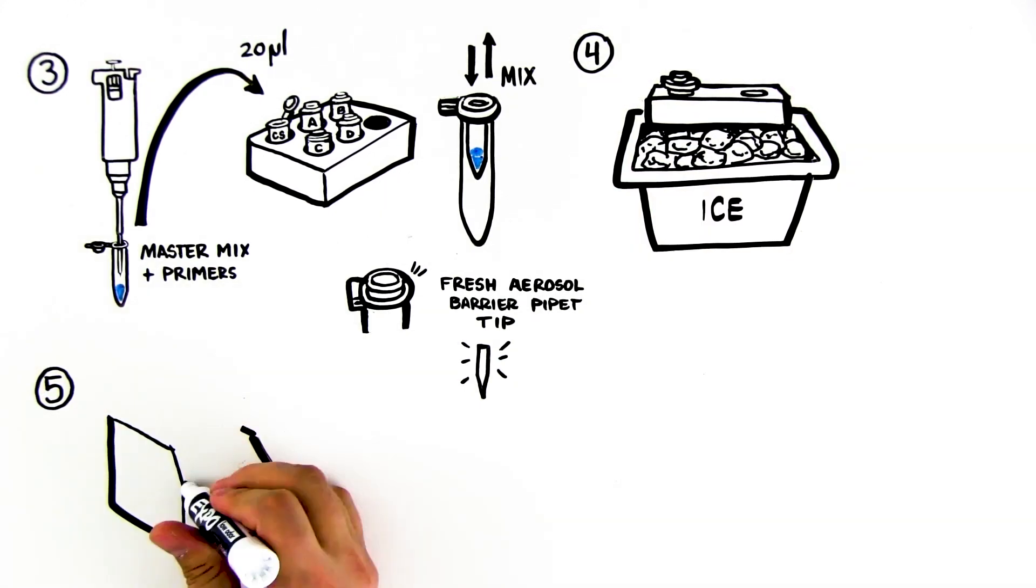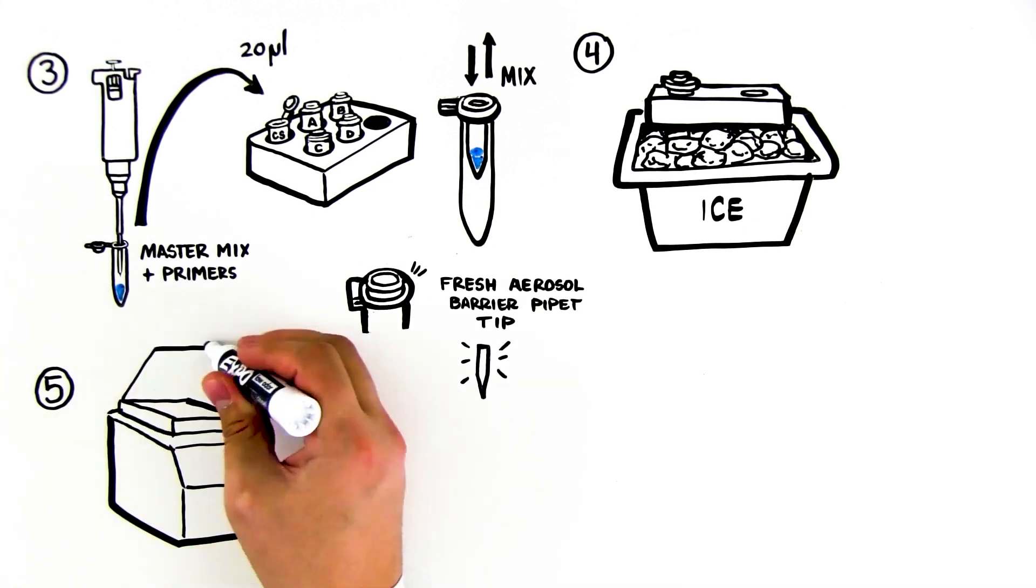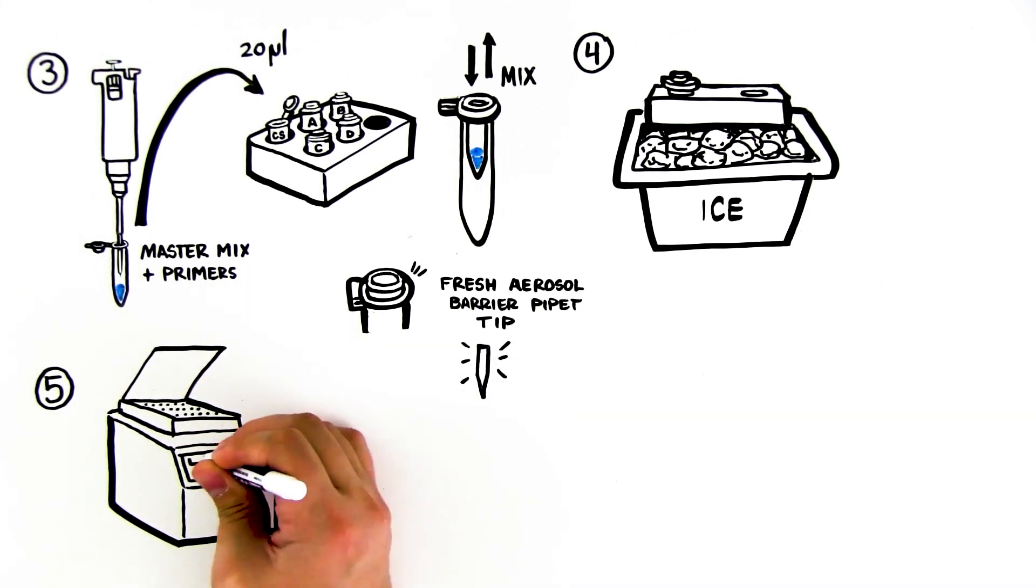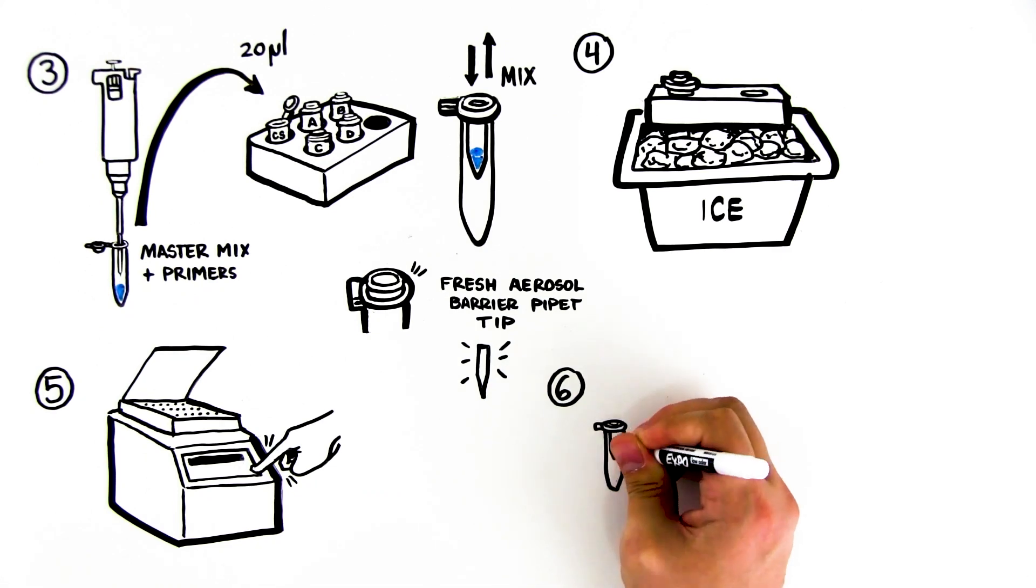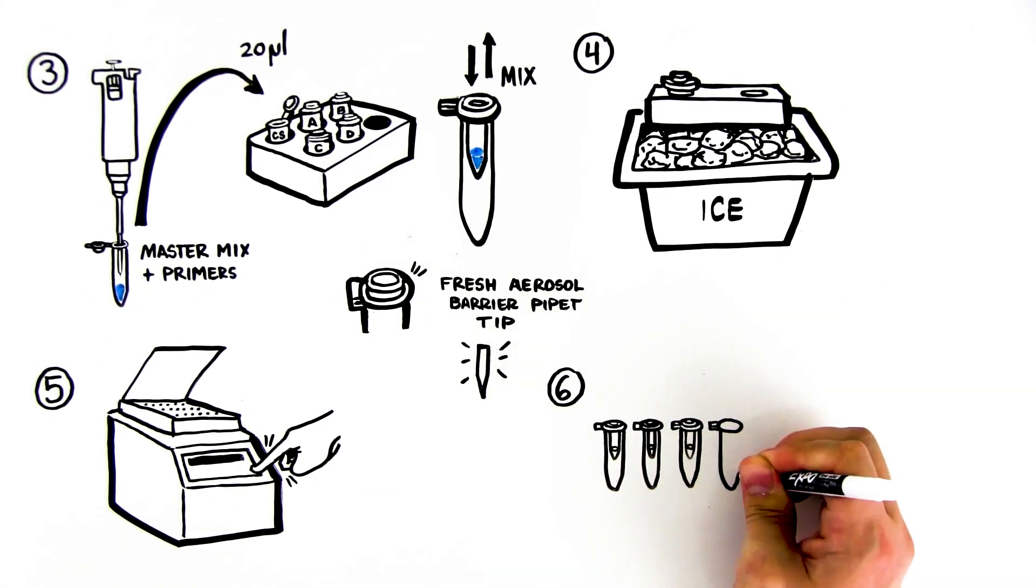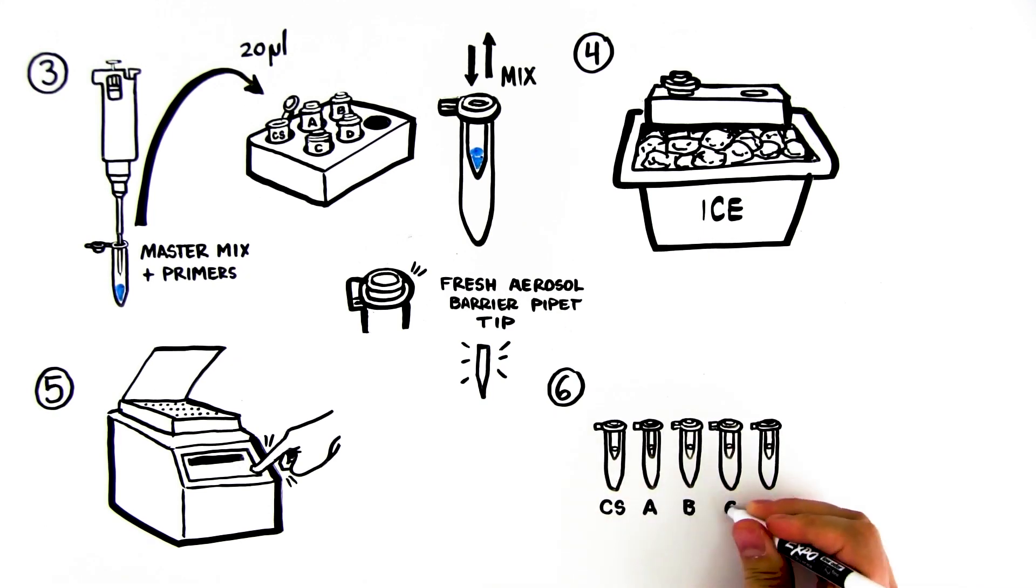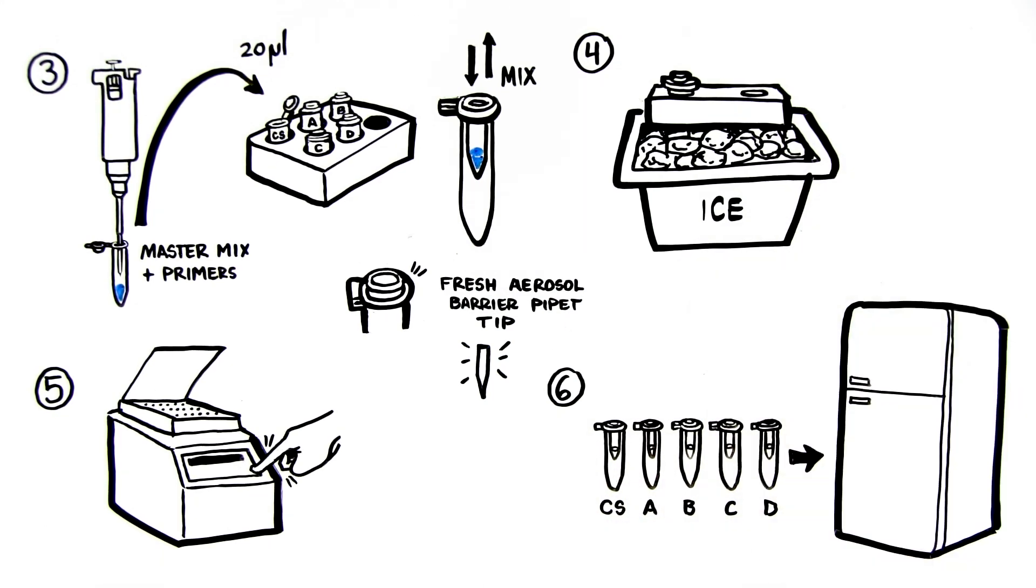Step 5: When instructed to do so, place your tubes in the thermal cycler. Your instructor will program the thermal cycler for PCR. Step 6: Upon completion of thermal cycling, store samples in refrigerator until next lesson or proceed to Step 1 of Lesson 2.